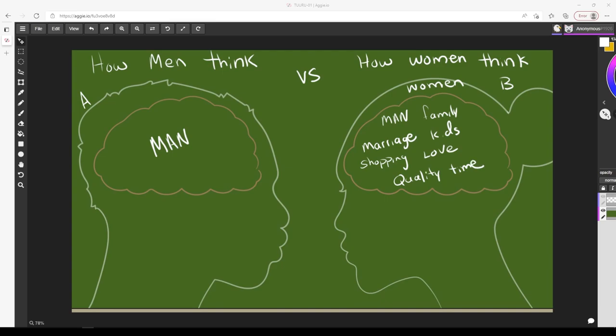So doesn't necessarily mean that every woman has these same particular things, but this is like a general idea. Now on the man side, a man will have things like his job, maybe money, maybe he'll have some goals he wants to achieve, his car, maybe he wants to get a house, something along the lines of that. Things that are I guess you could say materialistic in a sense.